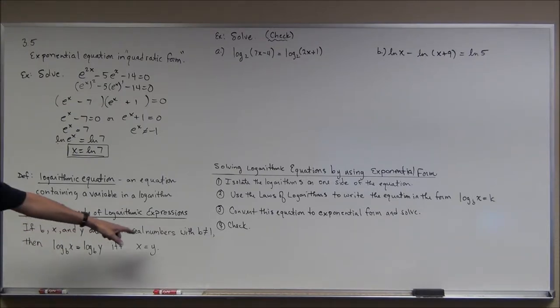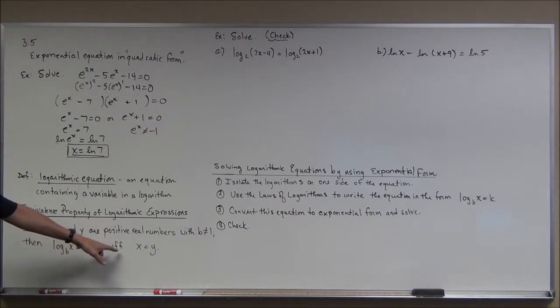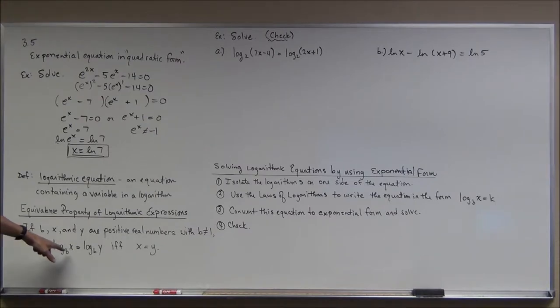If b, x, and y are positive real numbers, b not equal to 1, then log base b of x is equal to log base b of y, this is true, if and only if x is y. So x and y have to be positive numbers because you can't take the log of a negative number, or zero for that fact. So I'm going to see if I can use this property on these examples that are coming up here.